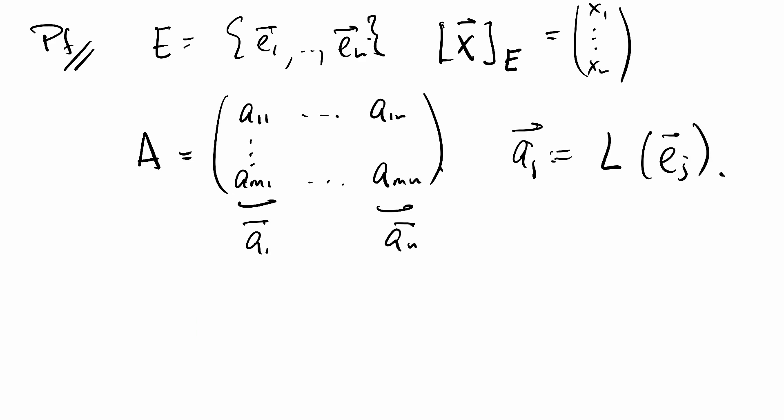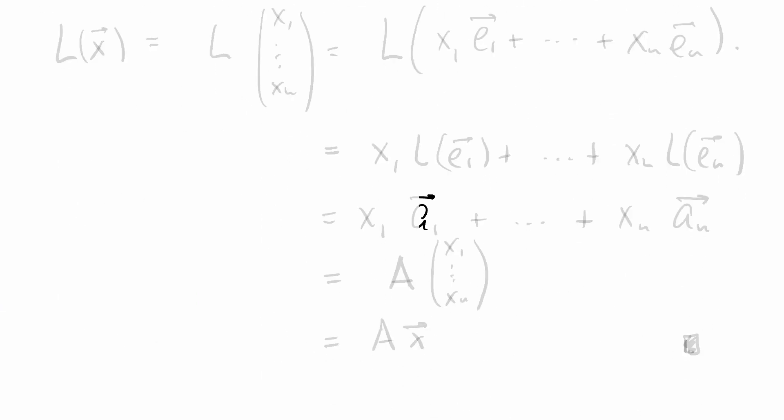Now, let's see what happens. L applied to X is L applied to X_1 times the first standard basis vector E_1, plus X_N times E_N.